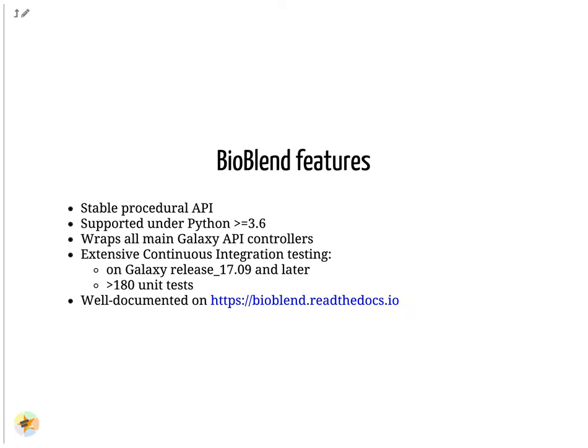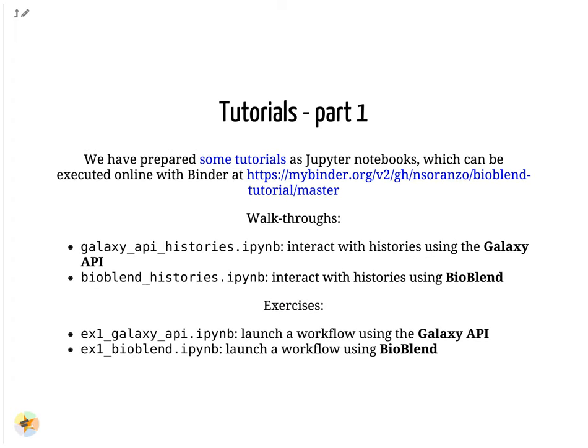BioBlend has a very stable procedural API and works on all supported Python versions. It provides methods wrapping all the important Galaxy API endpoints. The library uses continuous integration to perform a large number of tests on a wide range of Galaxy releases. The documentation of BioBlend is very well curated and is often more accurate than the corresponding Galaxy API documentation. Now it's a good time to try the Galaxy API and BioBlend — follow the instructions on the slide to access the tutorials and exercises.